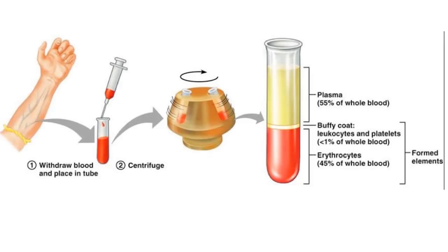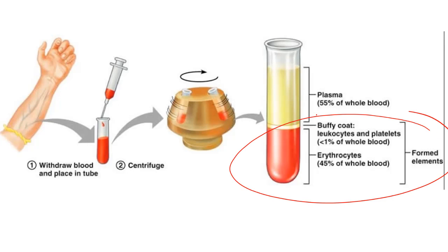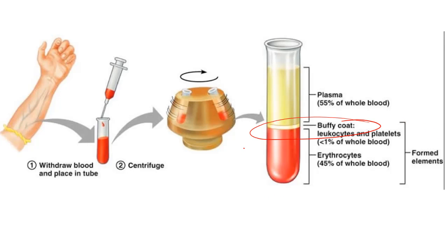For the blood: when blood is taken out and spun in a centrifuge, it separates into plasma and cellular components, with plasma making up half or more. The formed elements are cells — mostly red blood cells to carry oxygen. The buffy coat is made up of white blood cells that work with the immune system, as well as platelets.